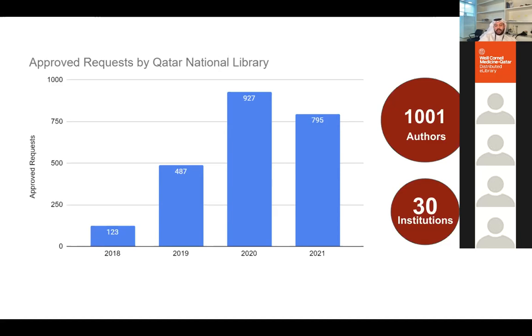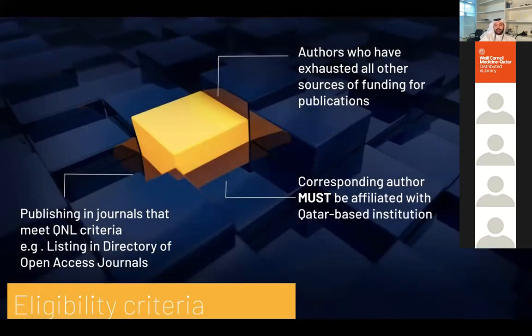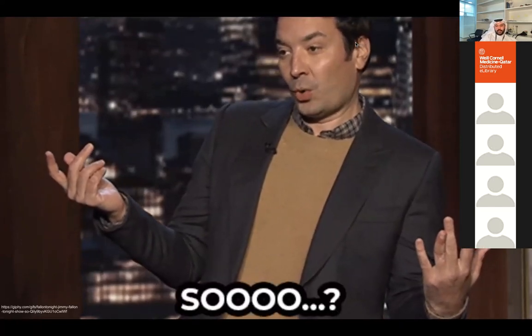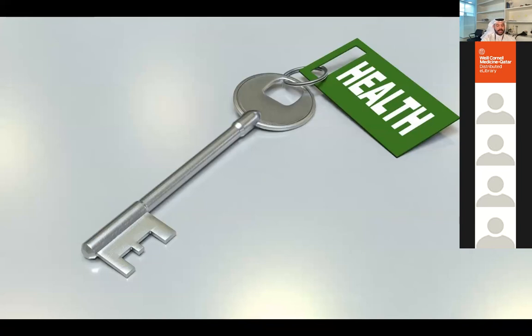The criteria for using the fund: we rely on the Directory of Open Access Journals as a standard for trust and credibility — your journal of choice should be listed there. Authors must have exhausted all other funding sources, and the corresponding author must be affiliated with a Qatar-based institution. If all criteria are met, the library can support the article. And how does this relate to health? Open access is key to supporting health information — open science can save health.